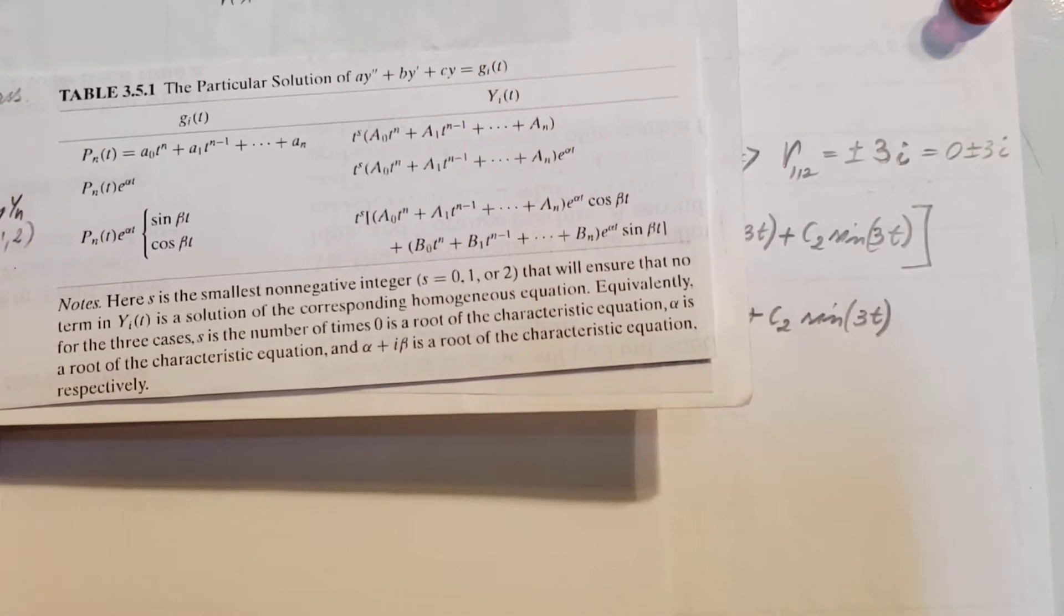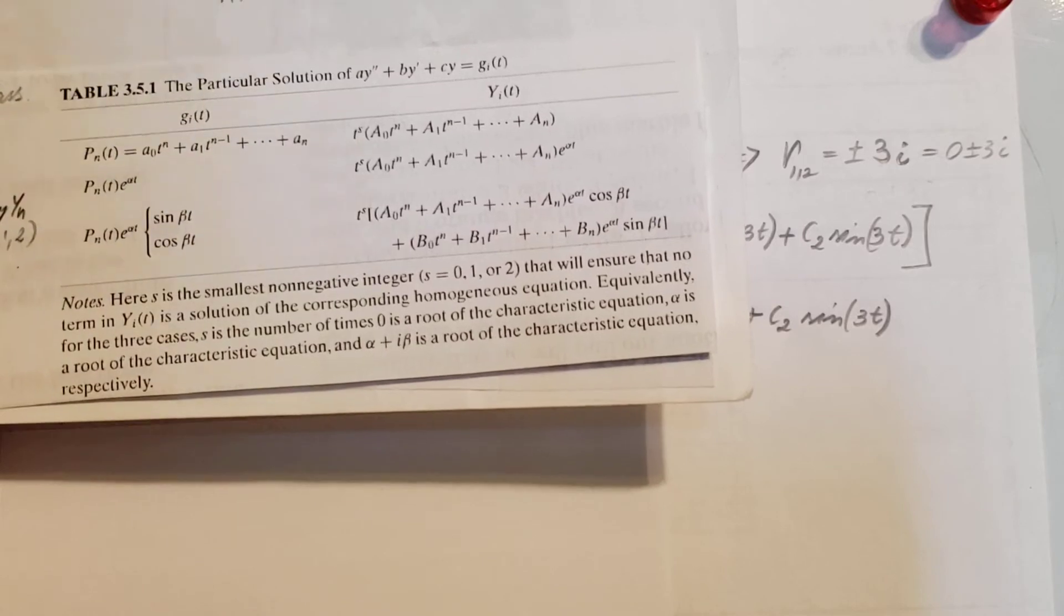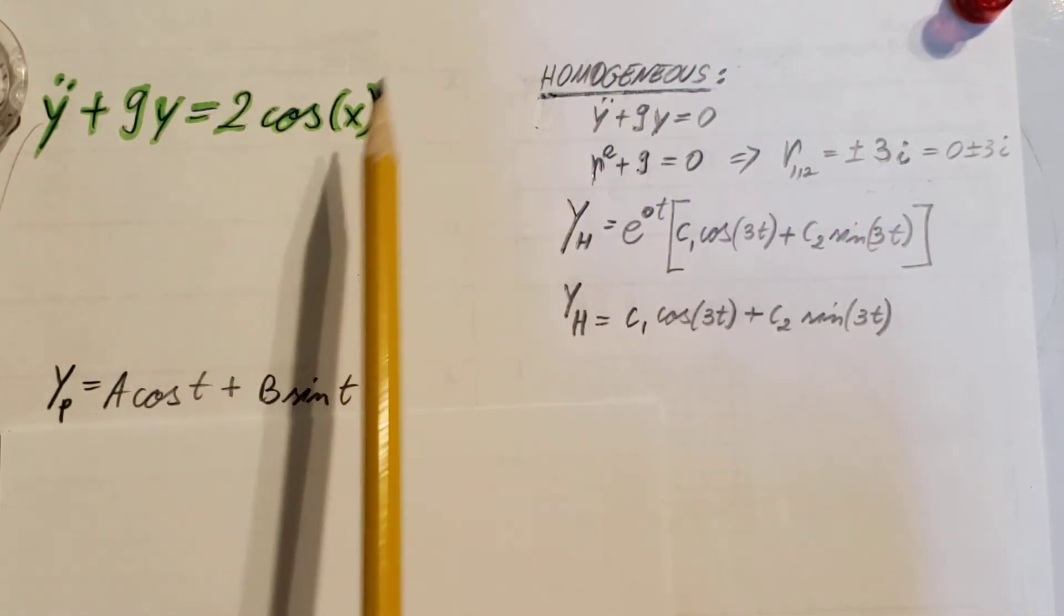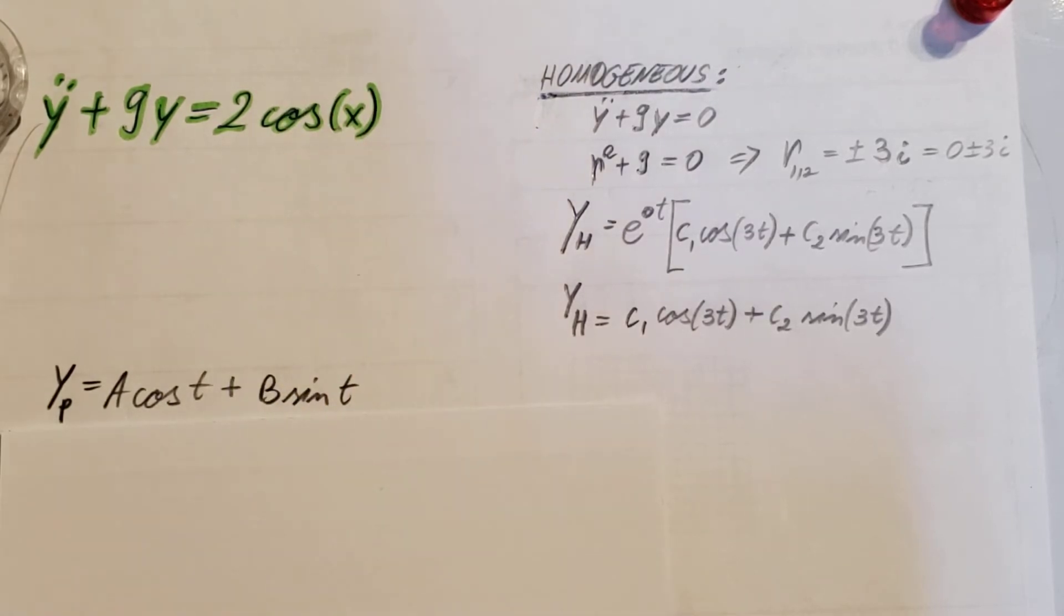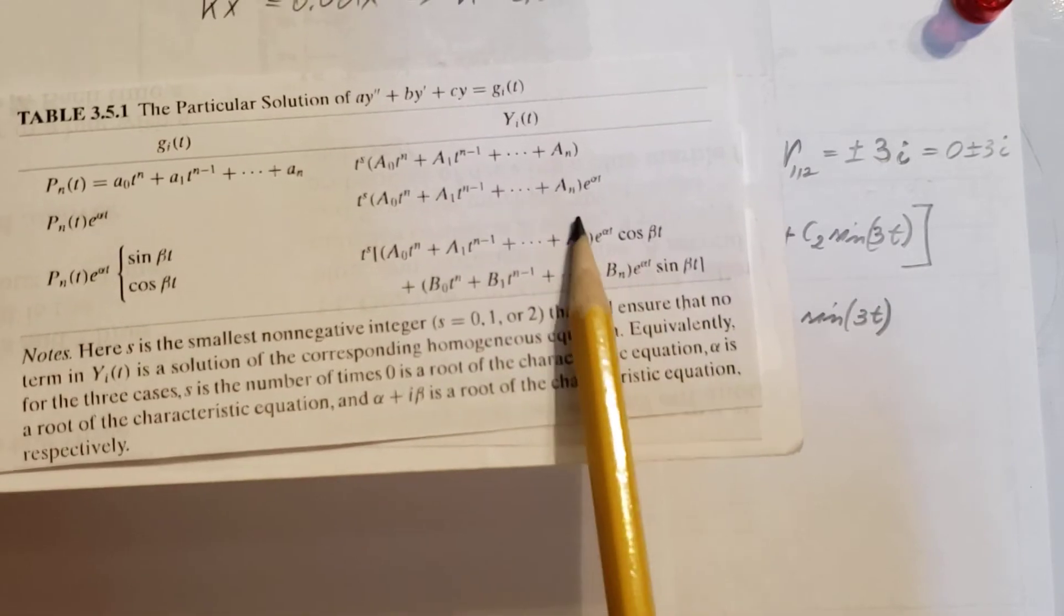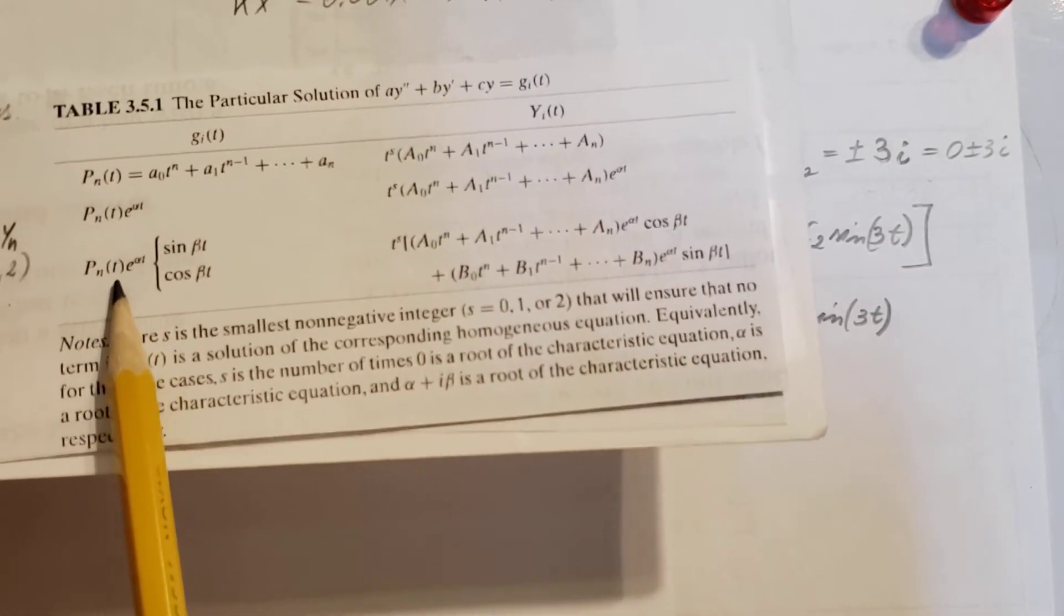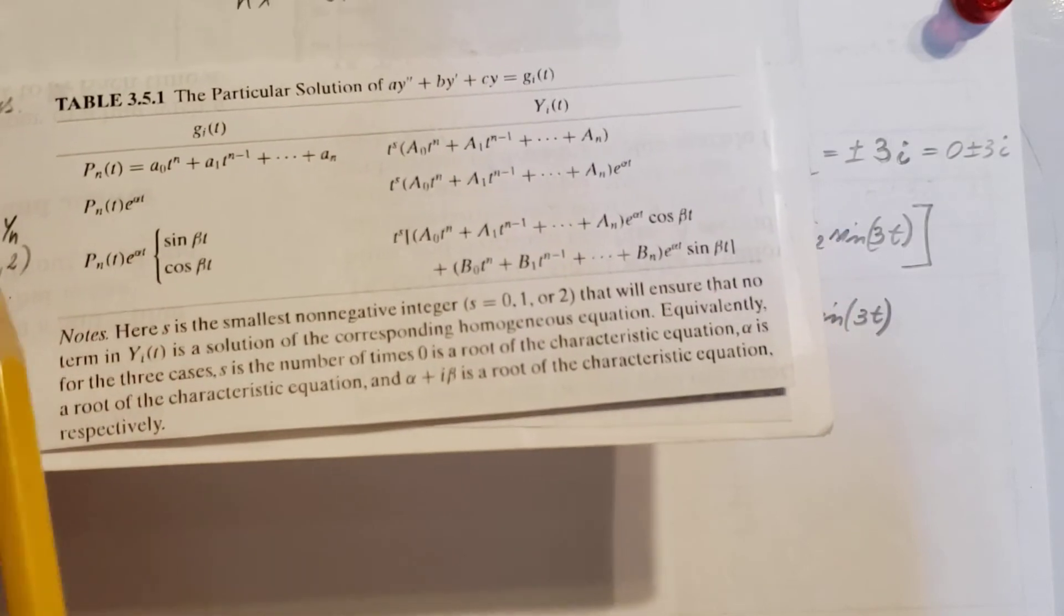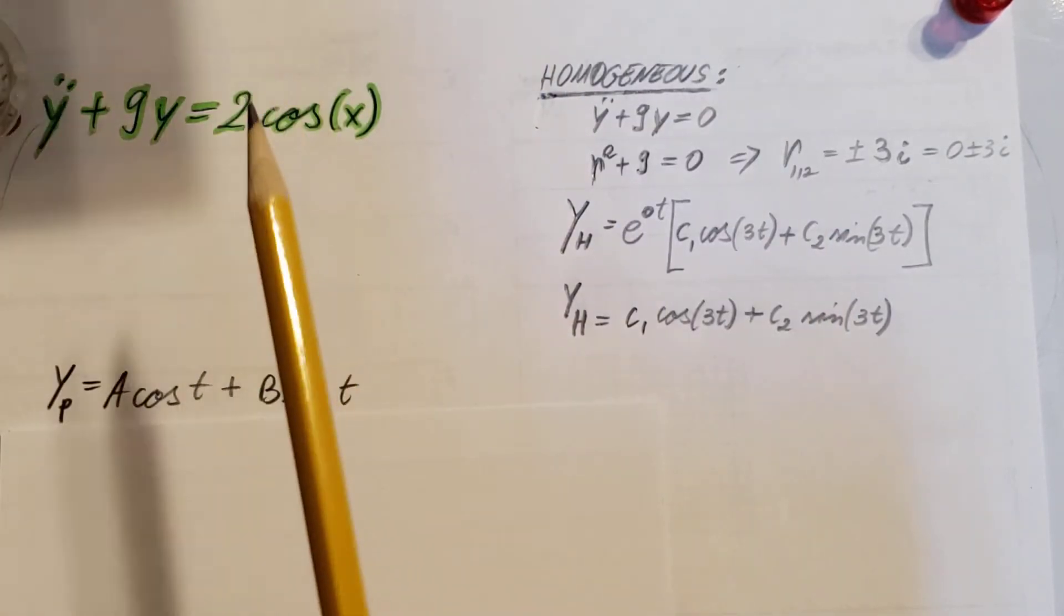Here I'm working with a sinusoid, 2 cosine x, so that's the part I'm gonna have to write up. The polynomial and the exponential part will be simply to the power of zero, so they will be simply one.